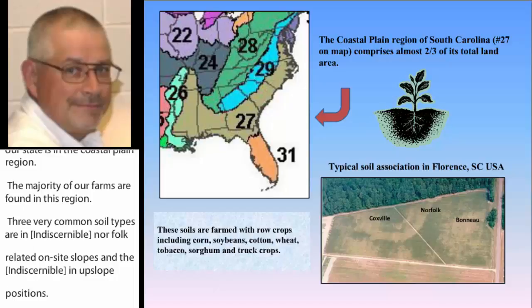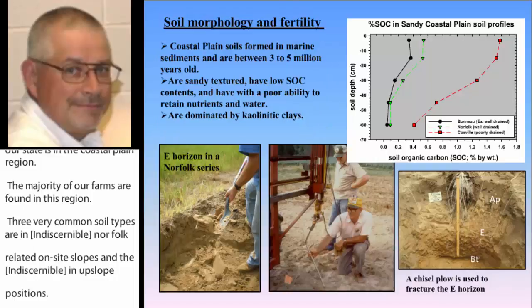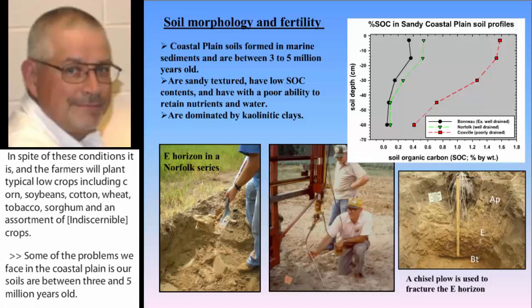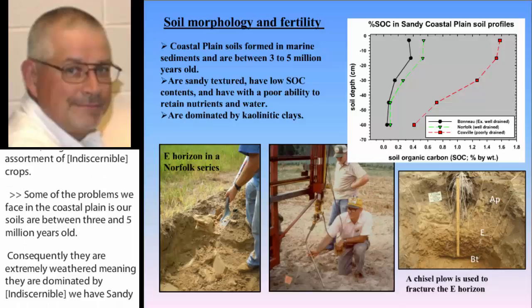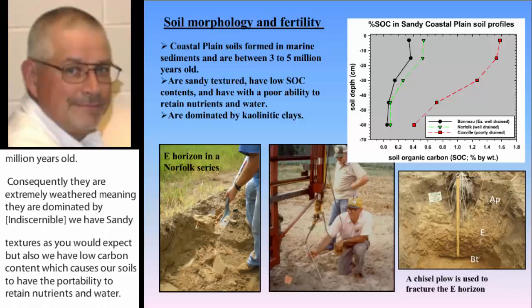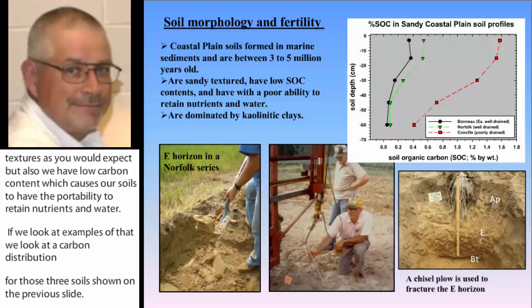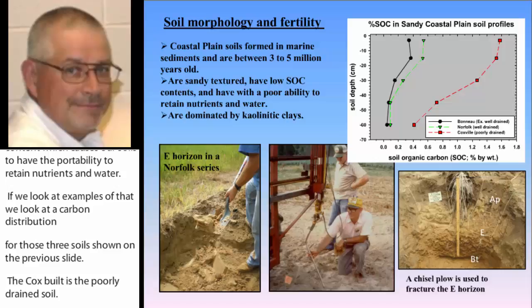Some of the problems we face in the coastal plain: first, our soils are between 3 and 5 million years old. Consequently, they are extremely weathered, dominated by kaolinitic clays. We have sandy textures, but also low carbon content, which causes poor ability to retain nutrients and water. Looking at carbon distribution for the Bonneau, Norfolk, and Coxville soils, the Coxville — the poorly drained soil — has much higher carbon content throughout the profile. But the Bonneau and Norfolk have fractionary amounts compared to the Coxville, with topsoil values as low as 0.2 to 0.5 percent organic carbon.